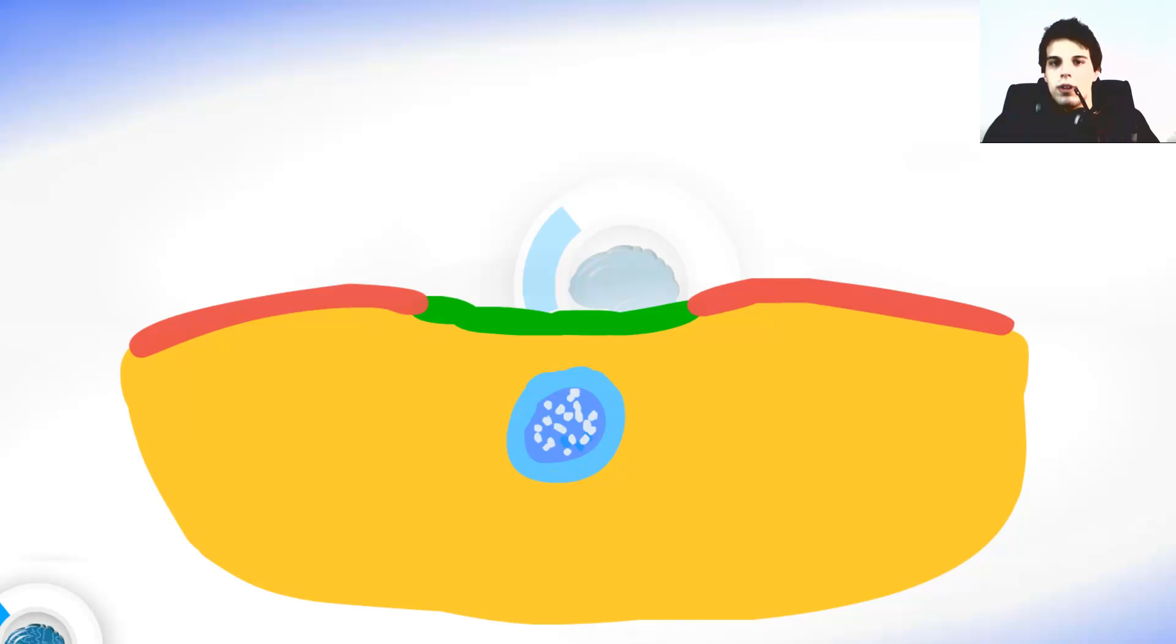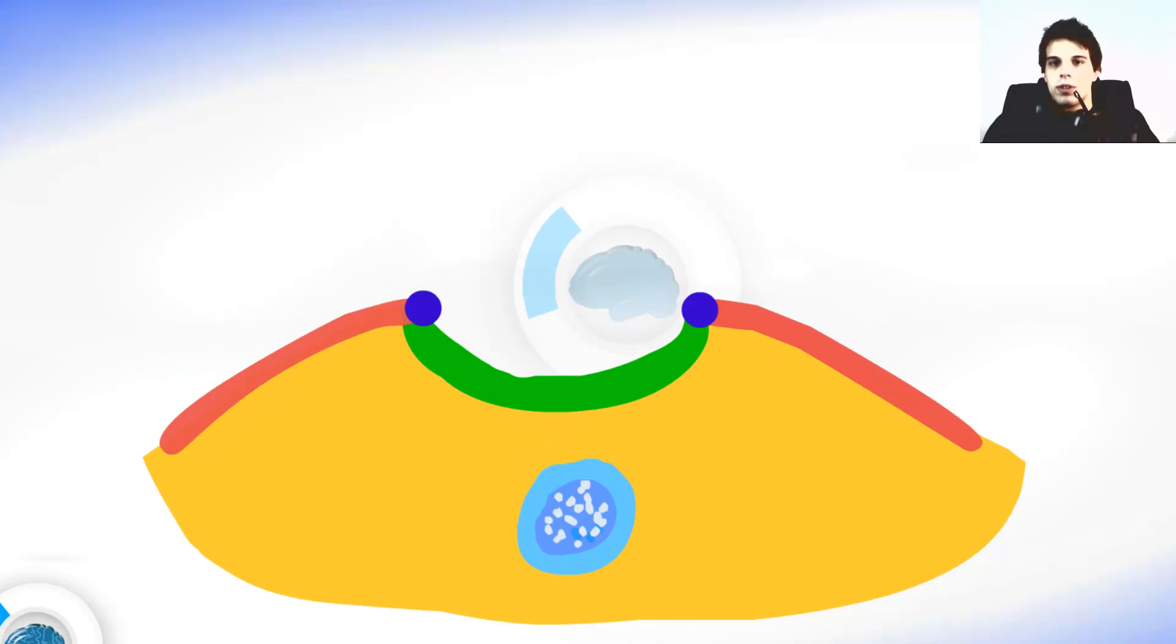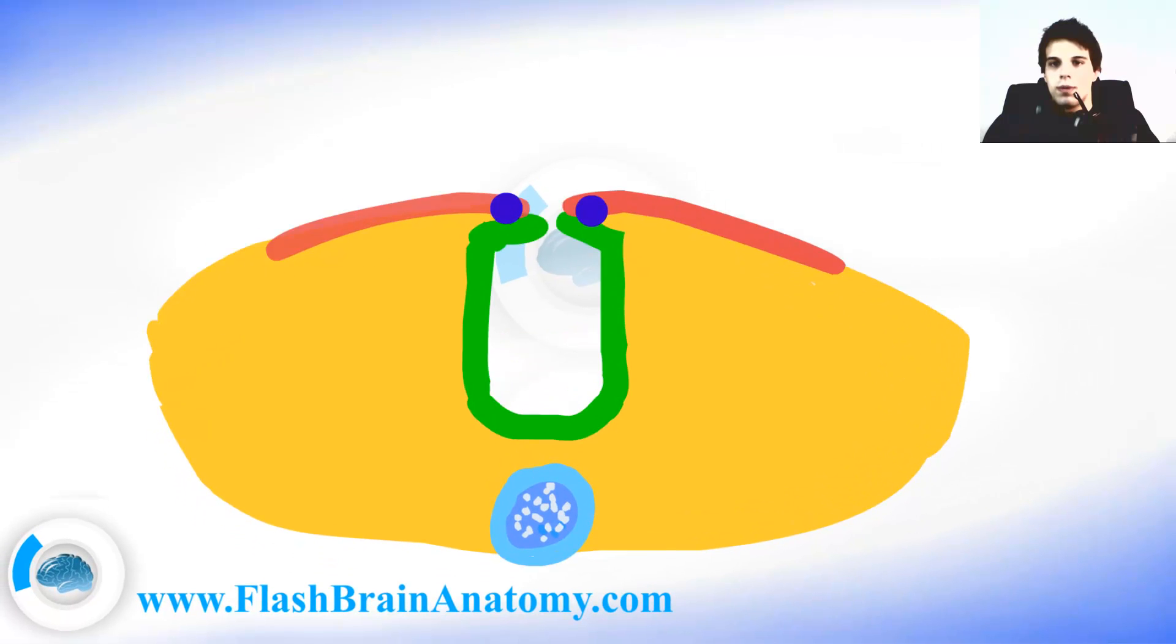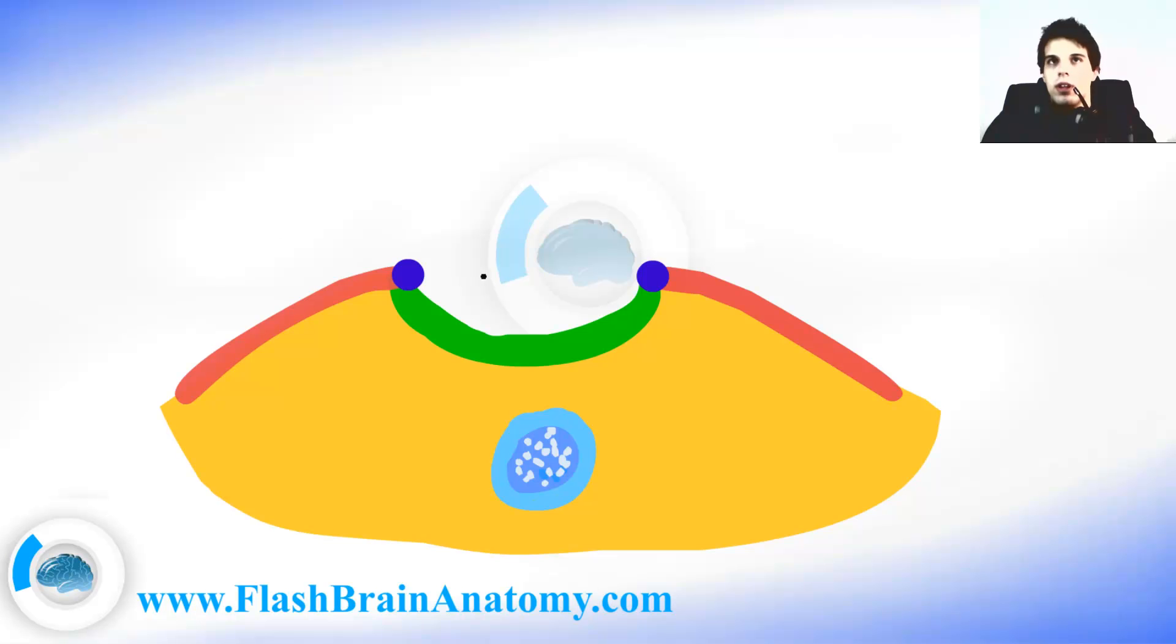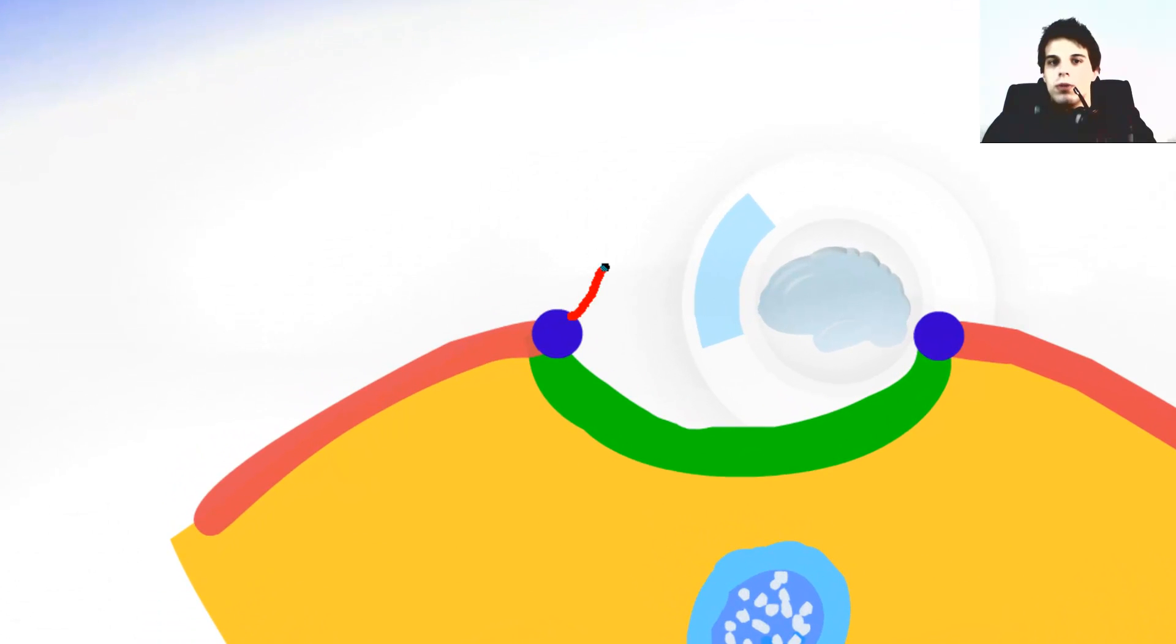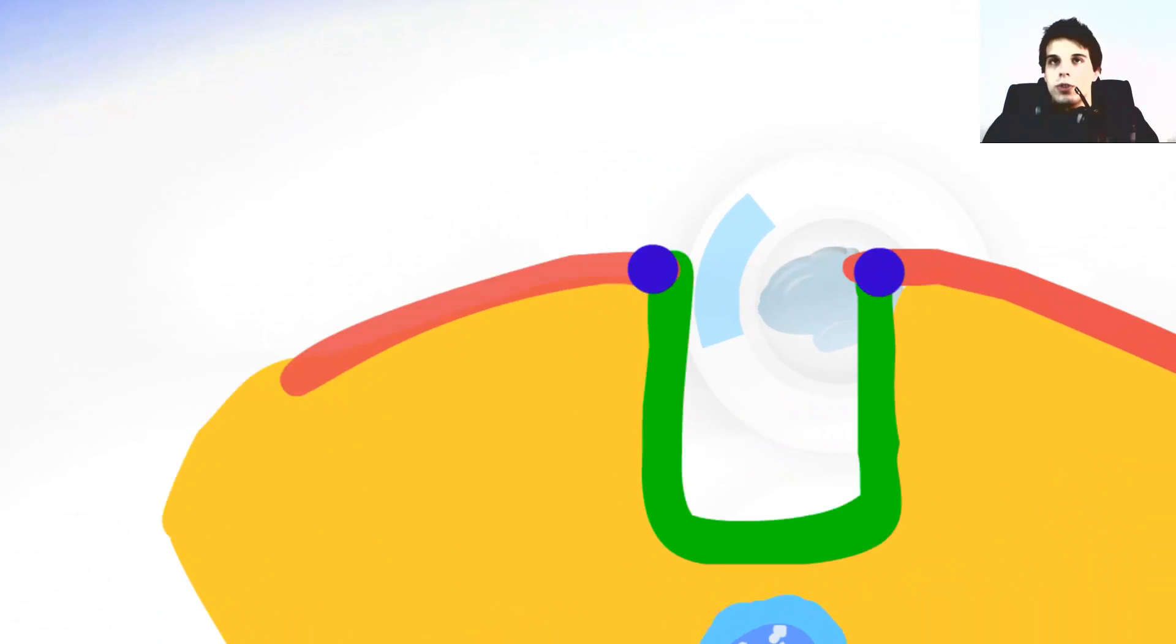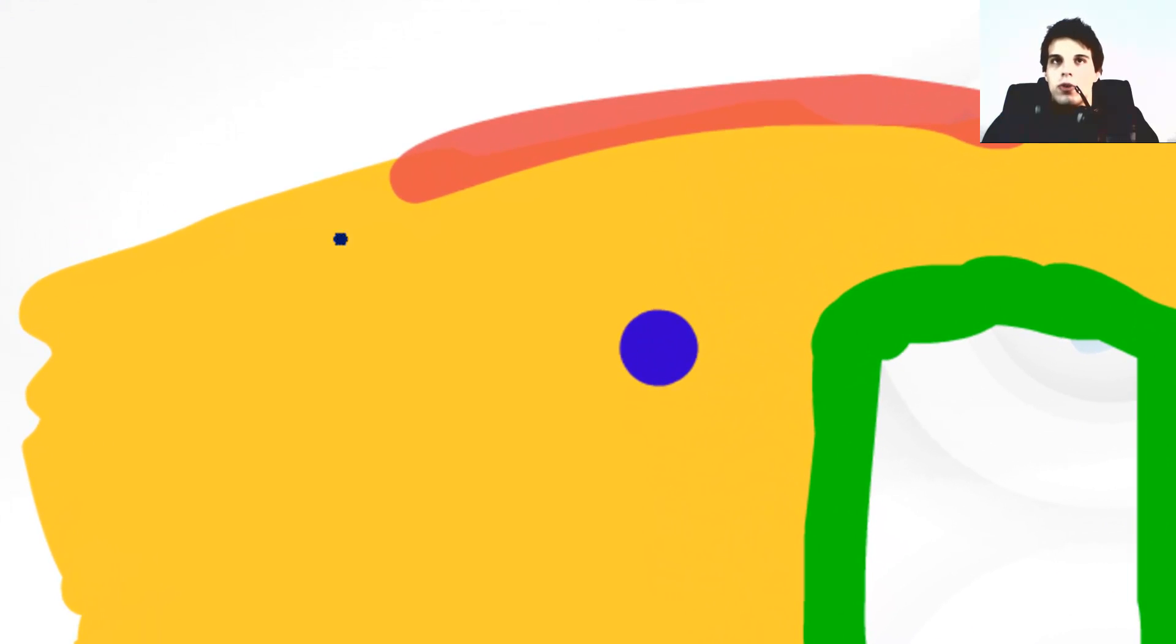The notochord induces this flat neural plate to fold into cylindrical neural tube. But at this point over here, this part is called the neural fold. And when the neural tube is created, out of the neural fold we have the neural crest developed over here. So first it was part of the ectoderm, and then it developed the neural crest.